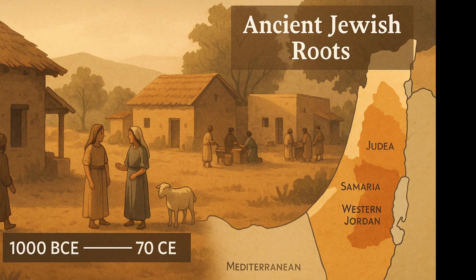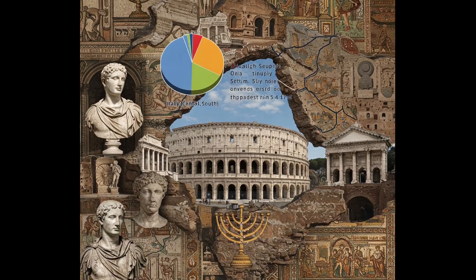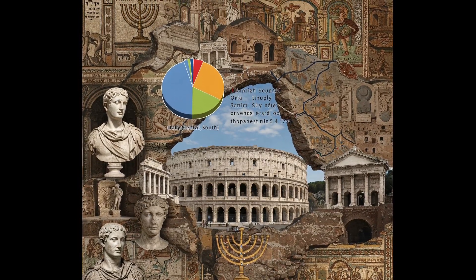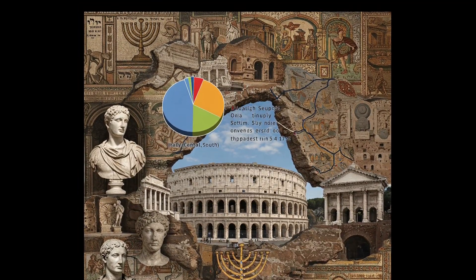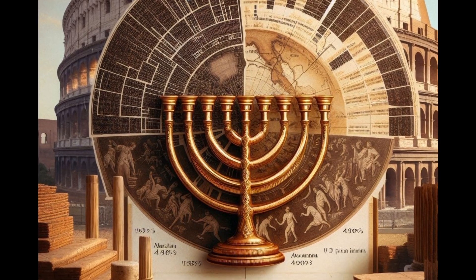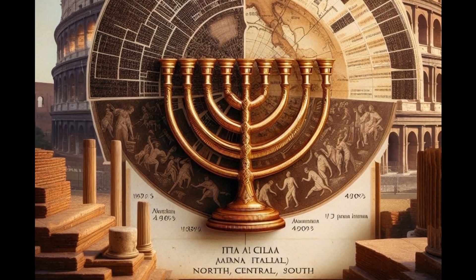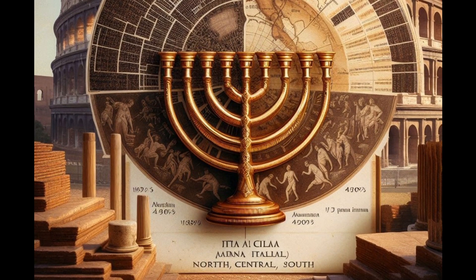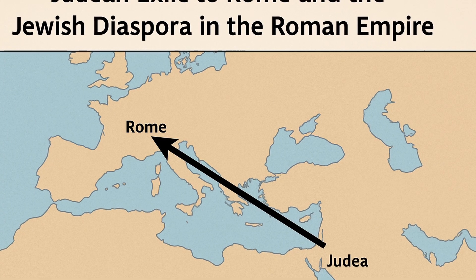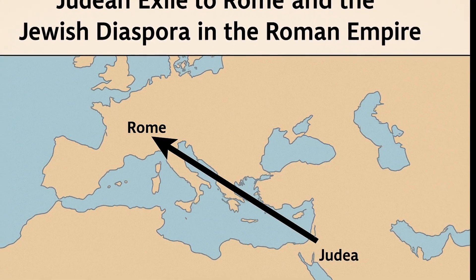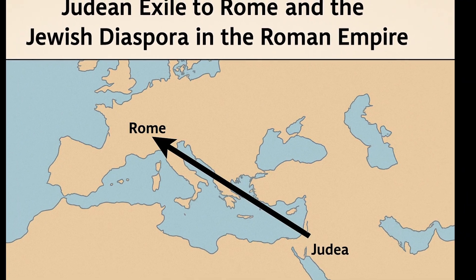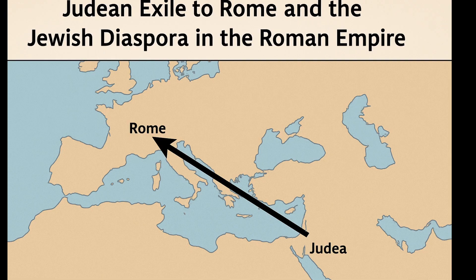Around another 40% of my ancestry comes from Italy, including northern, central, and southern parts. This likely reflects the period after the Roman conquest of Judea, when many Jews migrated or were taken into Roman territory. Over time, Jewish communities in Italy mixed with local Mediterranean populations, while preserving their cultural identity.